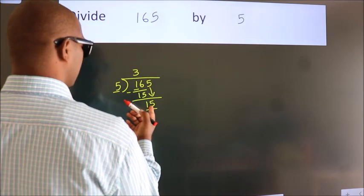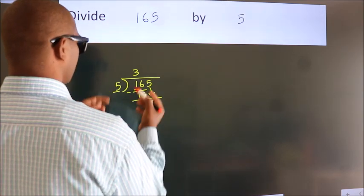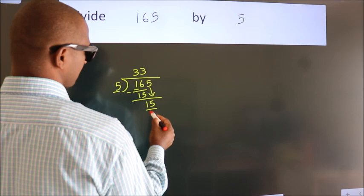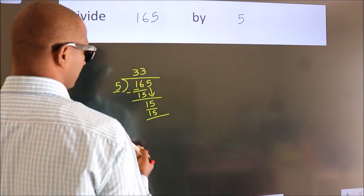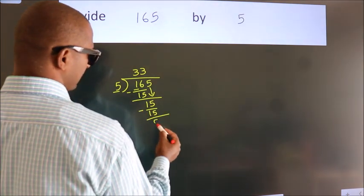When do we get 15? In the 5 table: 5 threes, 15. Now we subtract. We get 0.